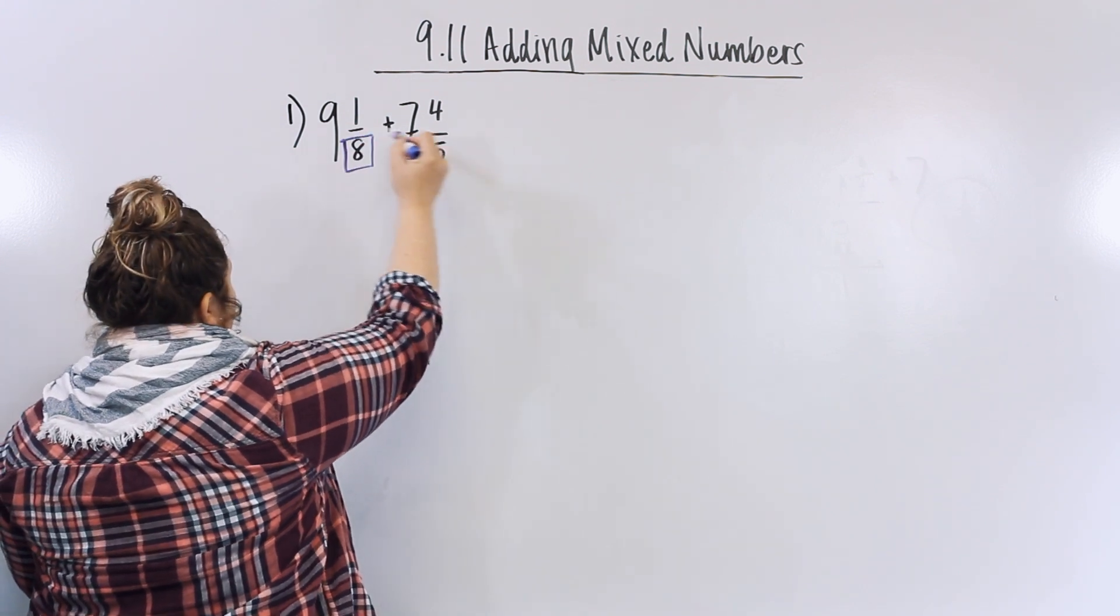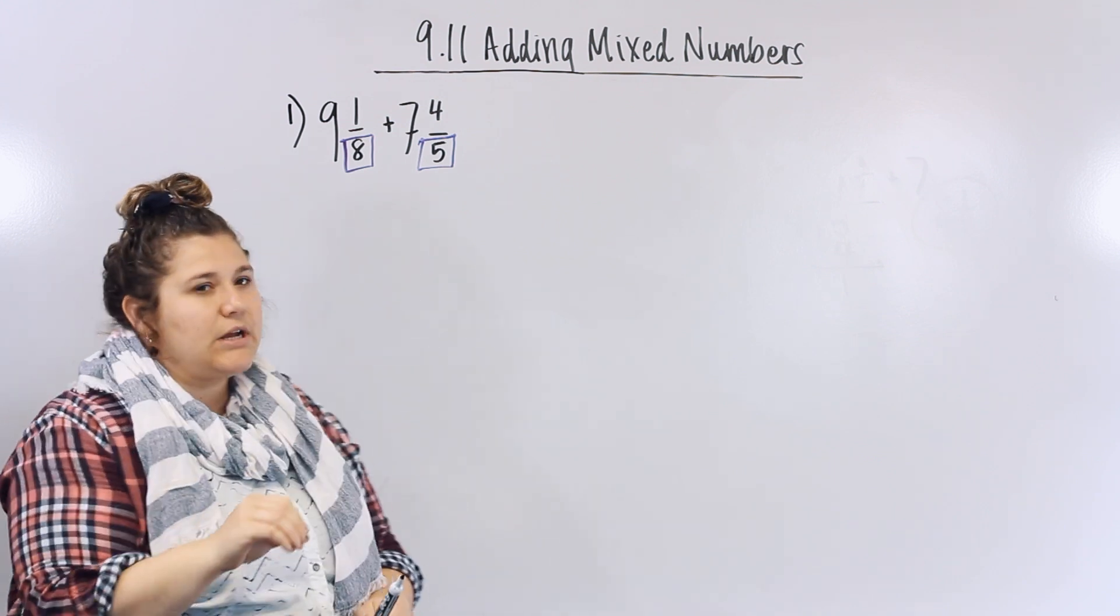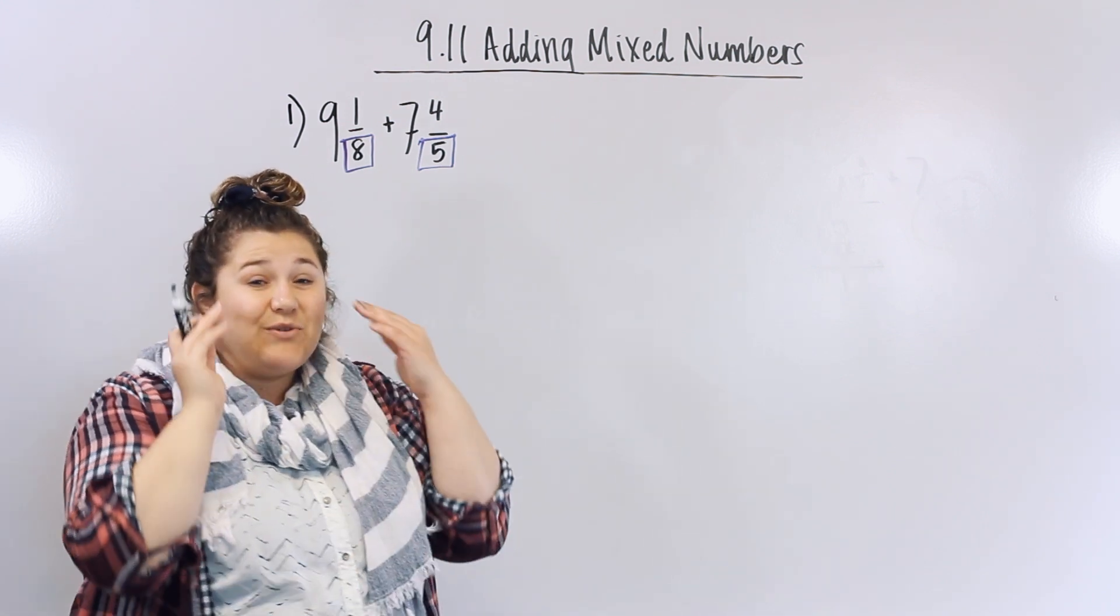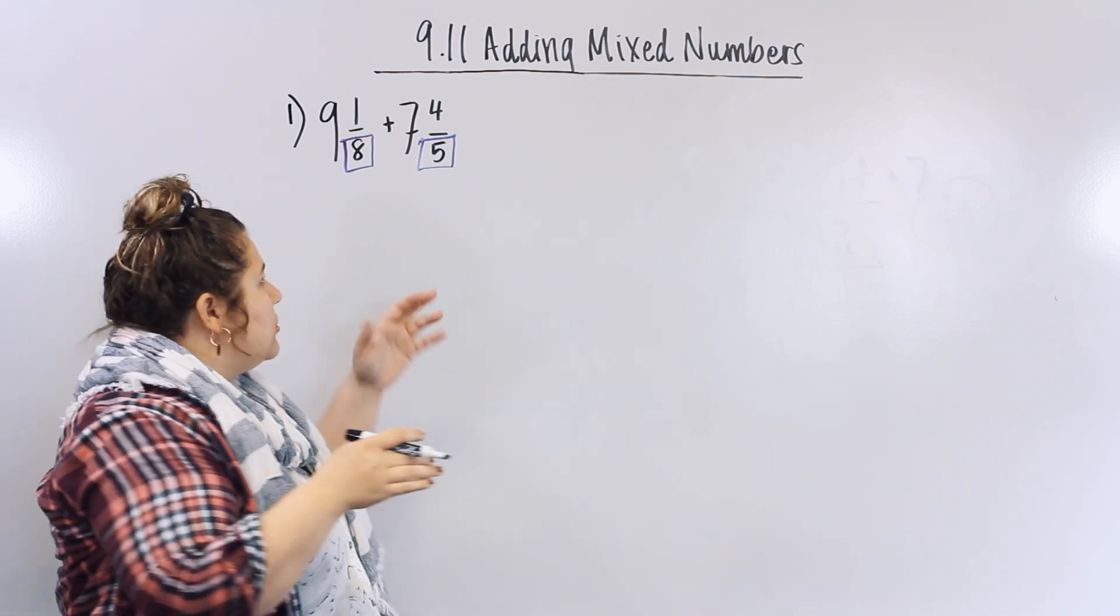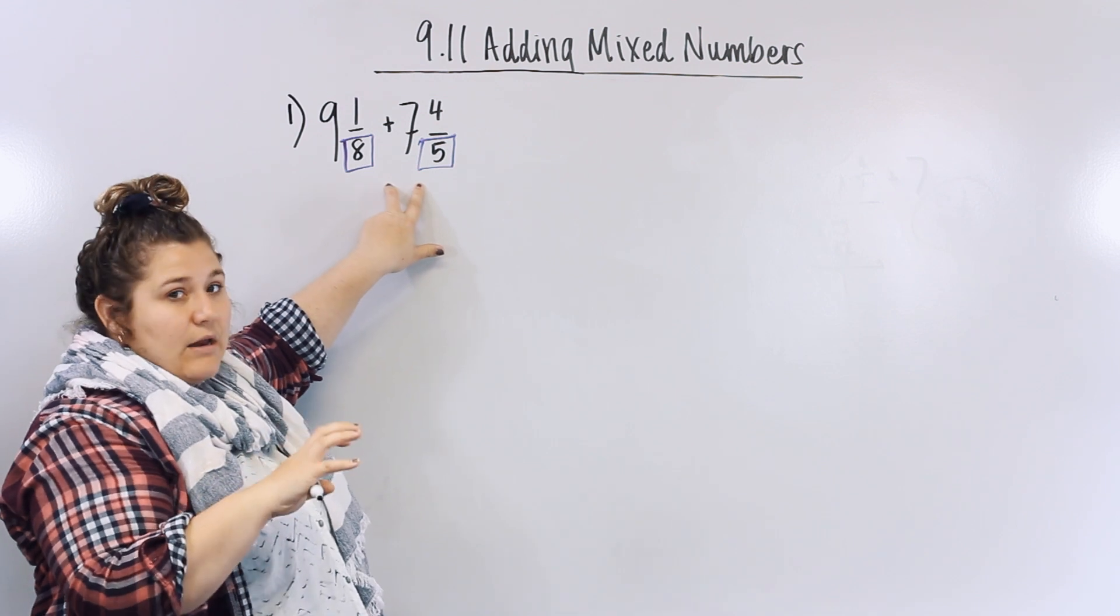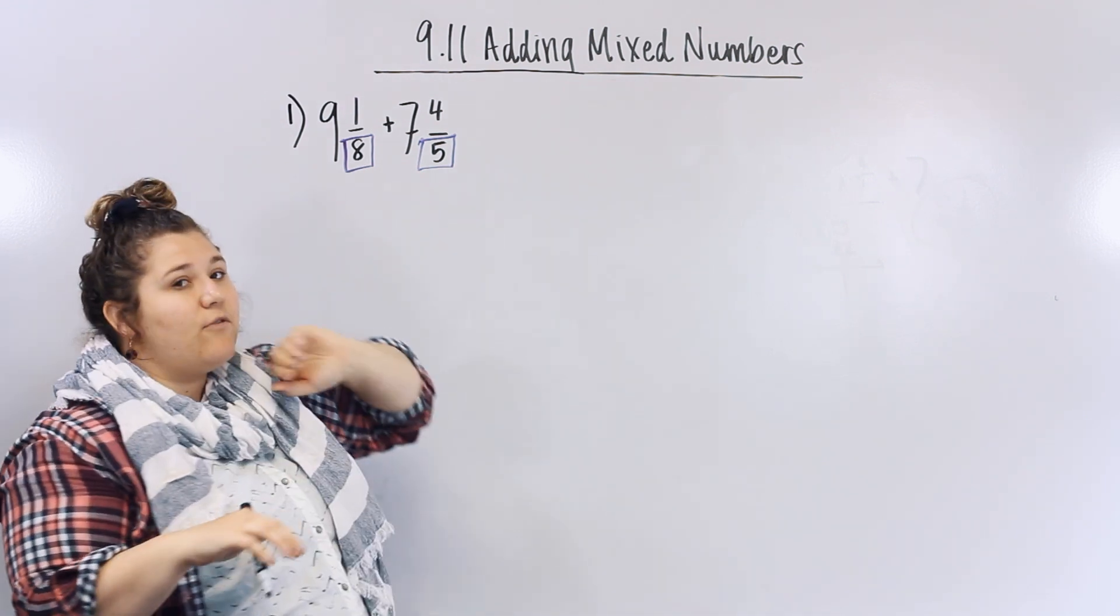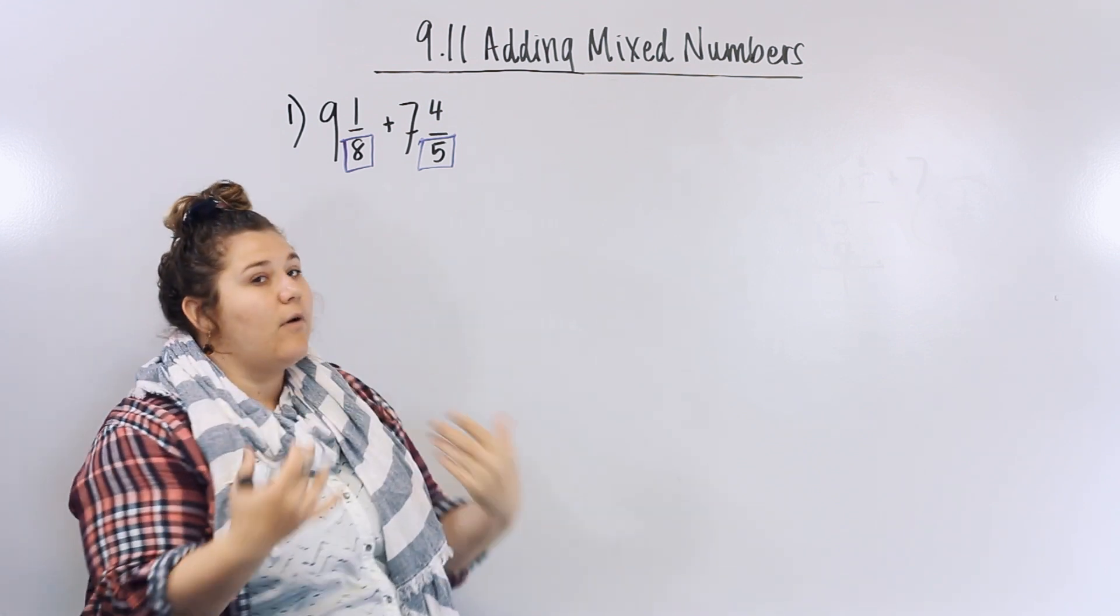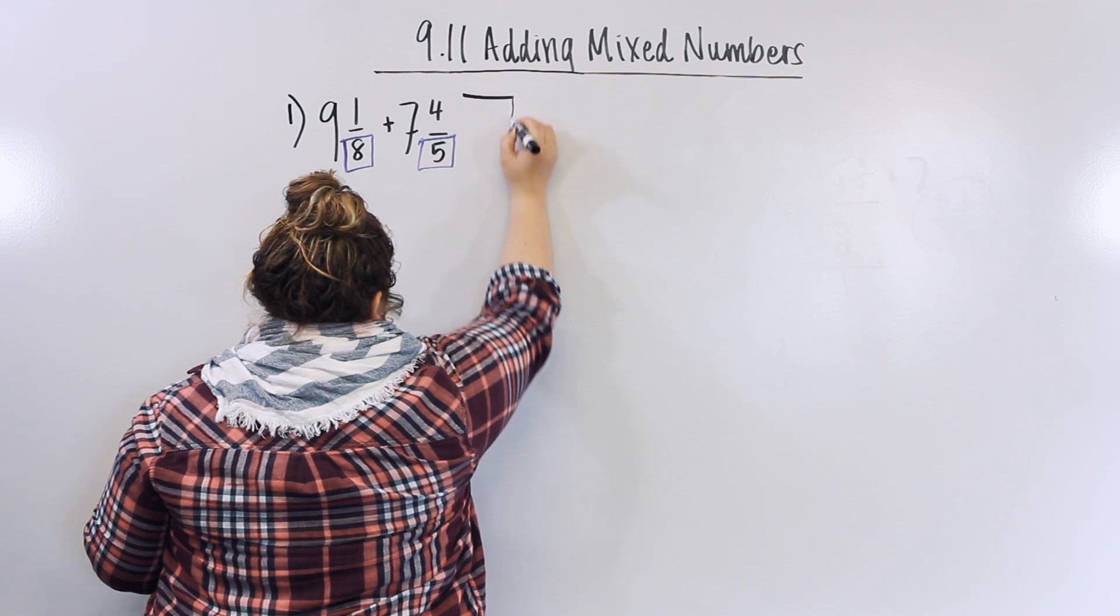Now remember that trick I showed you guys - if you can't think off the top of your head what a common denominator is, just multiply them together to get your common denominator. So I know eight times five is forty, so I'm going to use forty as my common denominator and I'm going to move my problem over here.